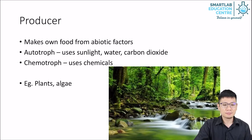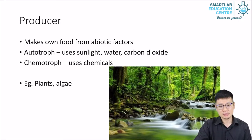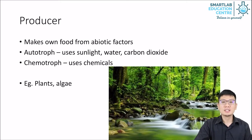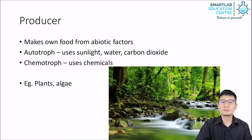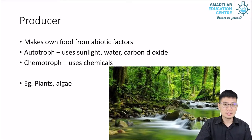We have the producers. Producers make their own food from abiotic factors, meaning they take carbon dioxide from the air and water from the soil, combine them to become sugar — glucose — through photosynthesis. That's what plants generally do.